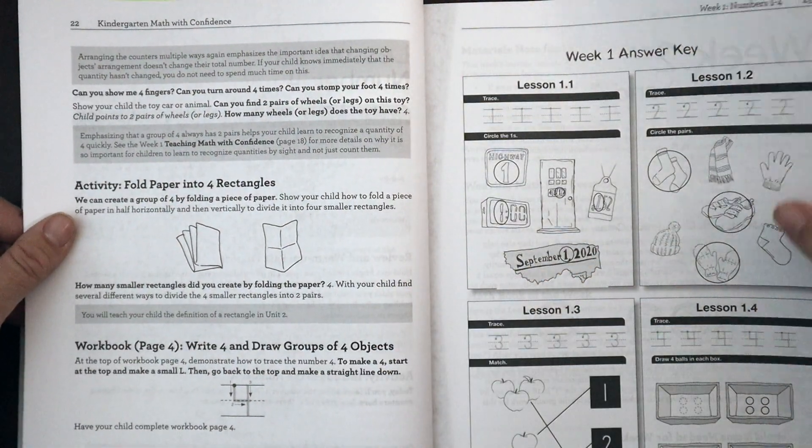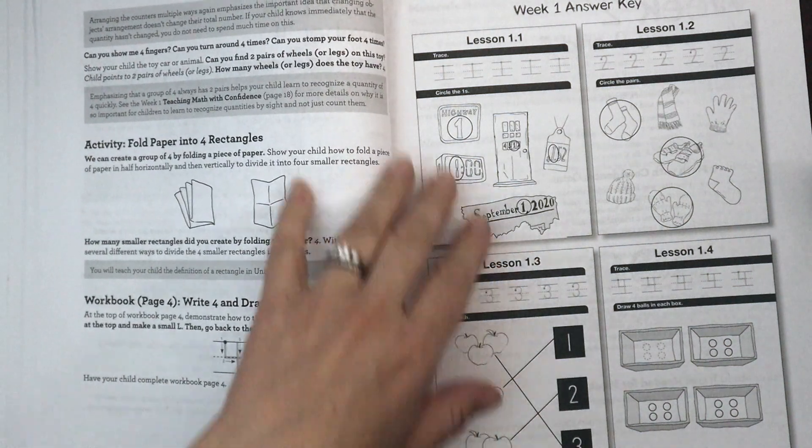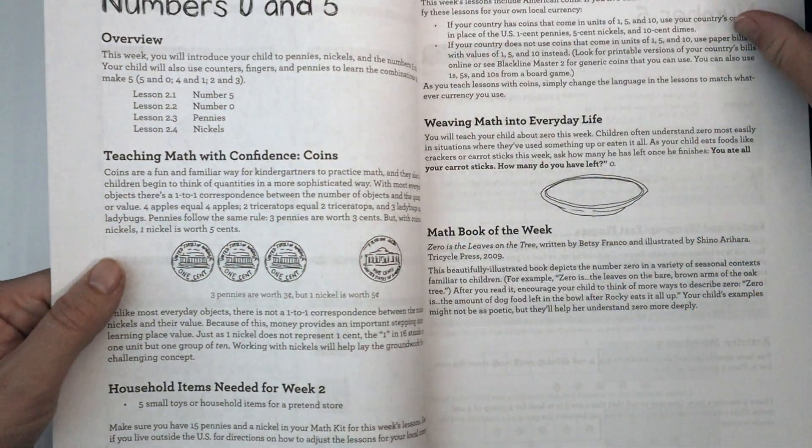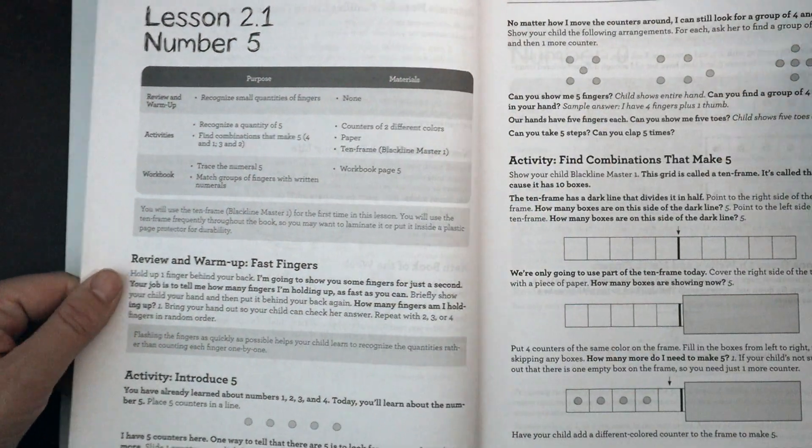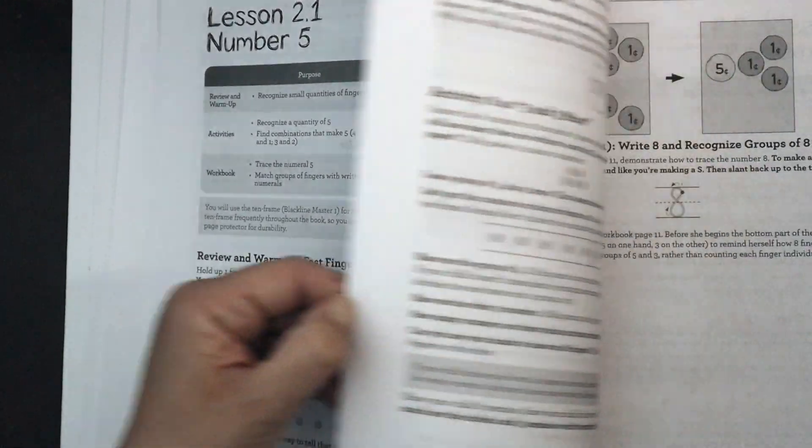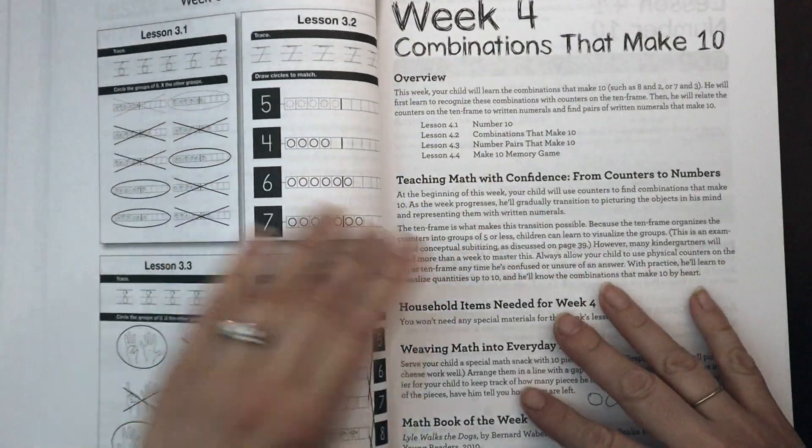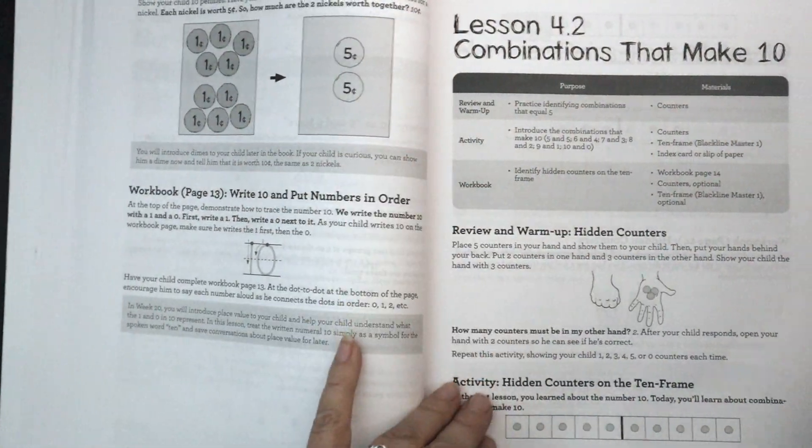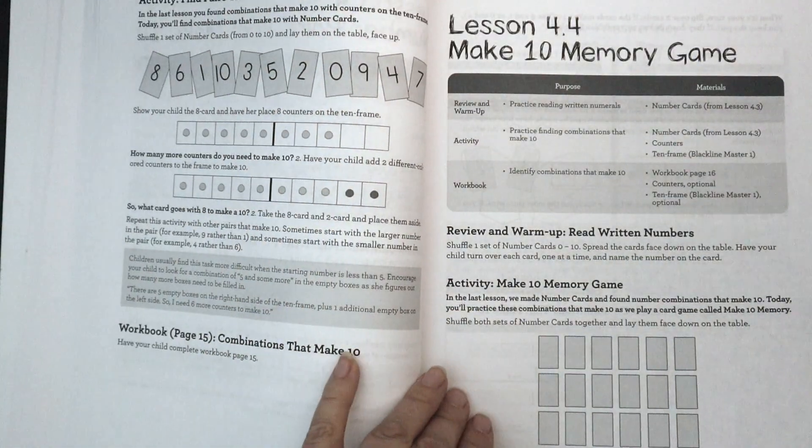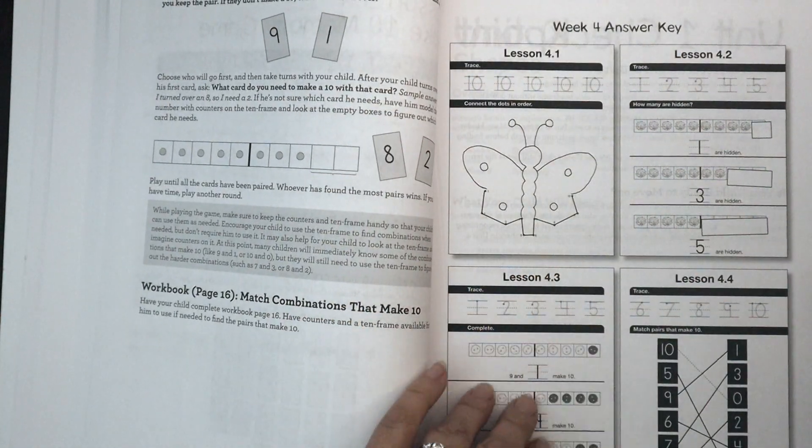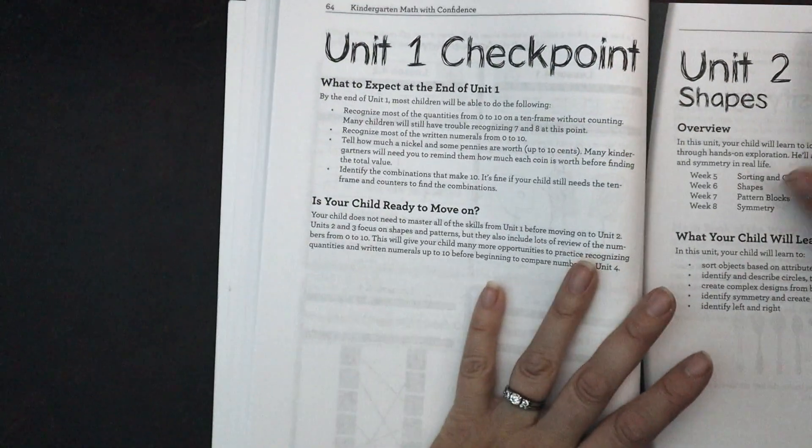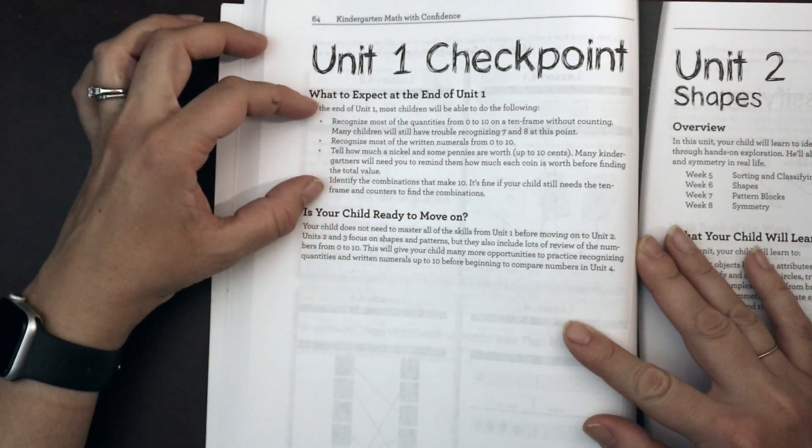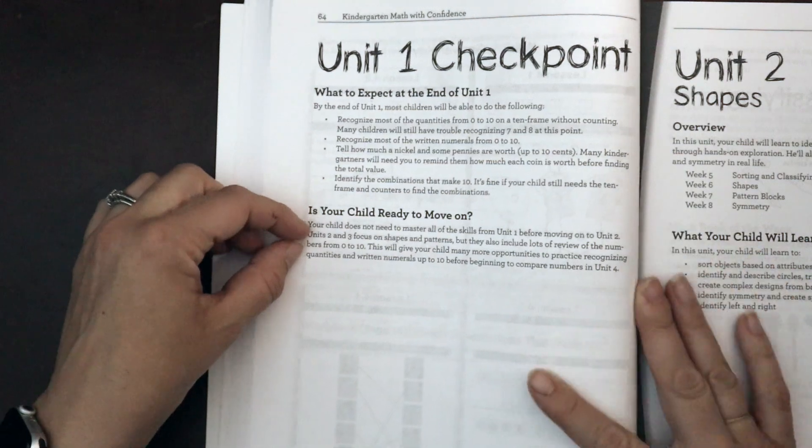Each lesson then follows the same progression. There is an answer key for the workbook, which for the kindergarten level is probably not needed. But as the grade levels advance, it might be more helpful for the parent. So moving through these different lessons, let's look at the end of unit one. So we have week four. Again, more of the lessons, all of the lessons are following the same format. There are lots of games throughout here. And here is our unit one checkpoint. What to expect at the end of unit one. And then it's a little bit of information about what your child should be able to do. And then is your child ready to move on?